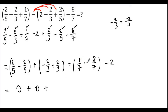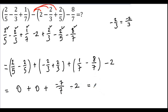So we have 0 plus 0 plus negative 7 over 7 plus negative 2. Negative 7 over 7 is negative 1, minus 2. Finally, the result is negative 1 minus 2, which equals negative 3. This is our answer for this example. Thank you.